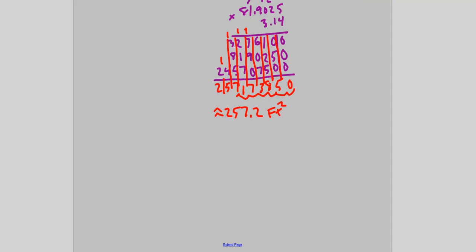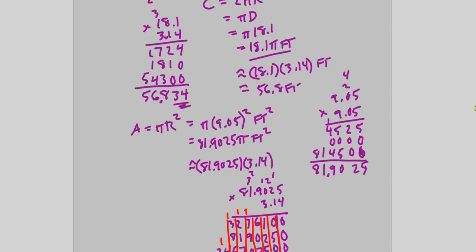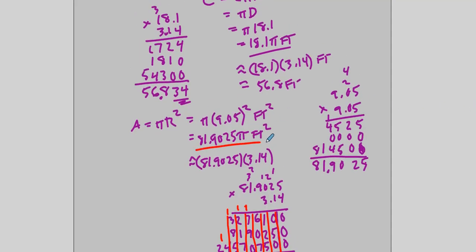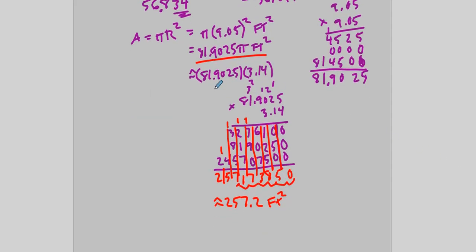Our exact area was 81.9025·pi square feet, and our estimate is approximately 257.2 square feet. Notice that's roughly 82 times 3, which would give about 246 — we got 257 as a better estimate since we used the more precise value. And this concludes the video.